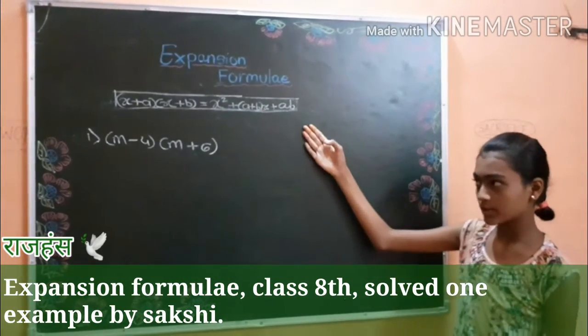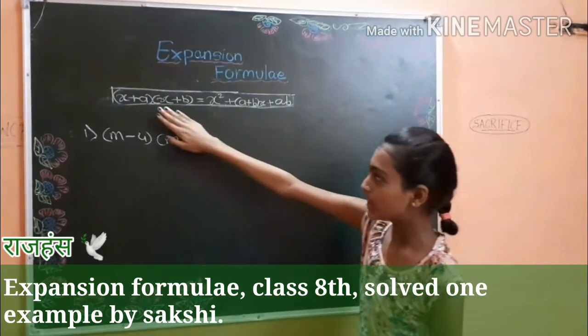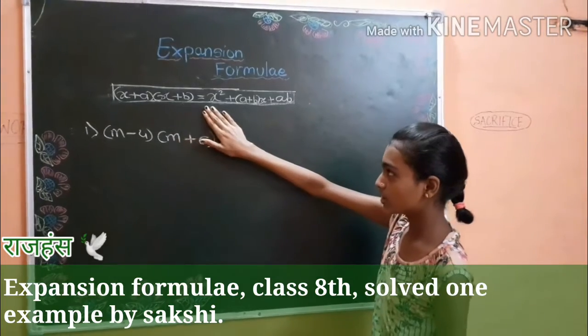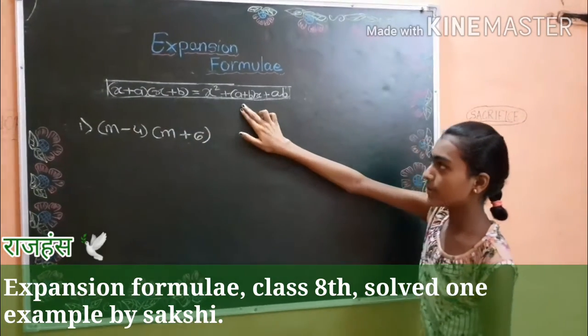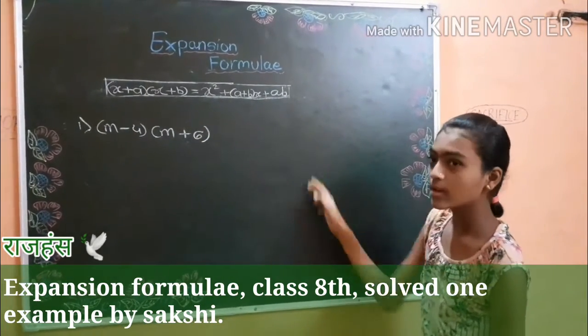So this is my expansion formula. x plus a, x plus b is equal to x square plus a plus b, x plus ab.